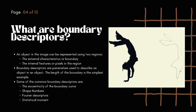One simplest example of a boundary descriptor is the length of the boundary. Some common examples of boundary descriptors are eccentricity of the boundary curve — eccentricity is the ratio of the principal axis of that particular shape — shape number, Fourier descriptors, statistical moment, etc.